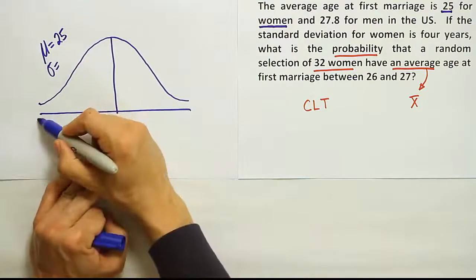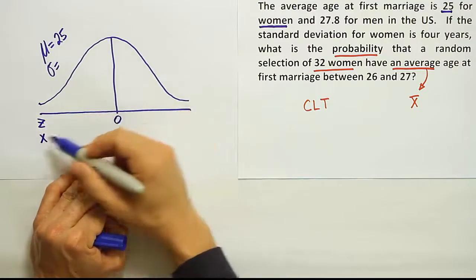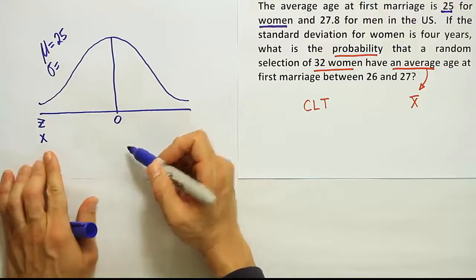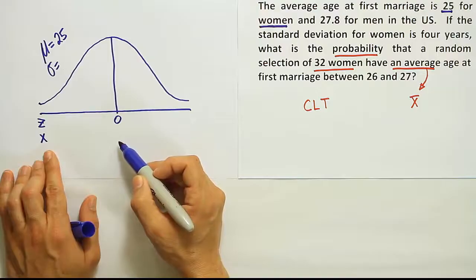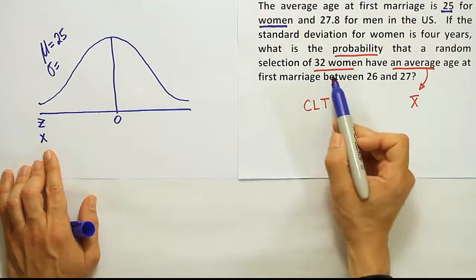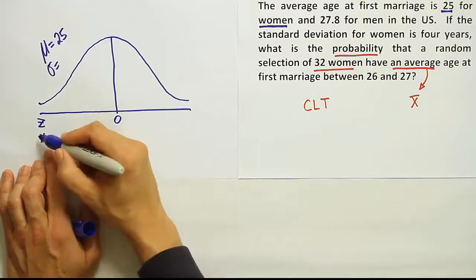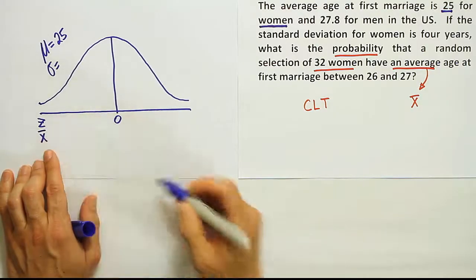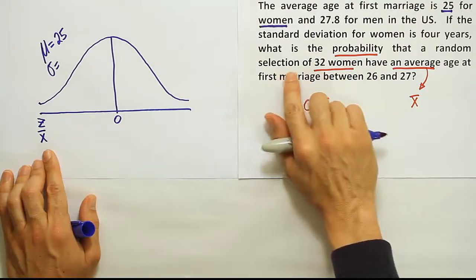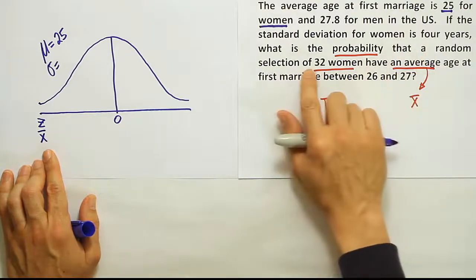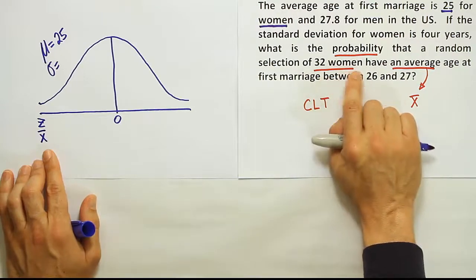I want to be careful now. This problem is not about x like we normally have. Normally we have a z-axis at 0, and then an x-axis where x represents the value for an individual, right? So it might be an individual woman's age at marriage. But here we're talking about a sample of 32 women, and we're talking about the average being between two numbers. So it's not x that we're dealing with, it's x-bar actually.